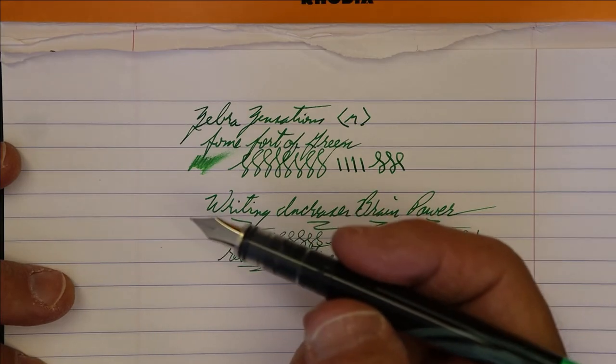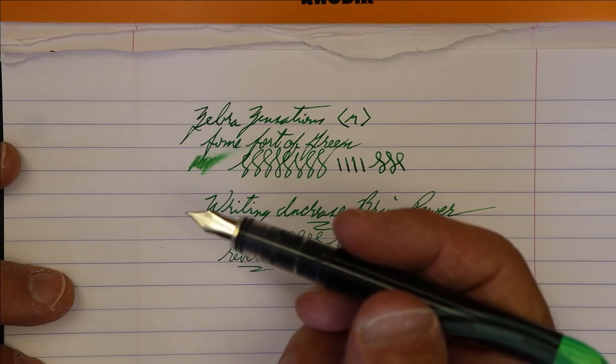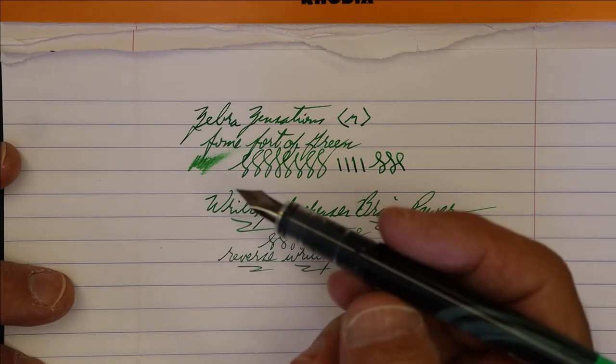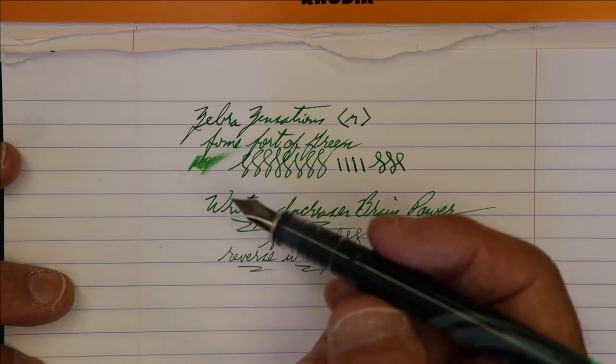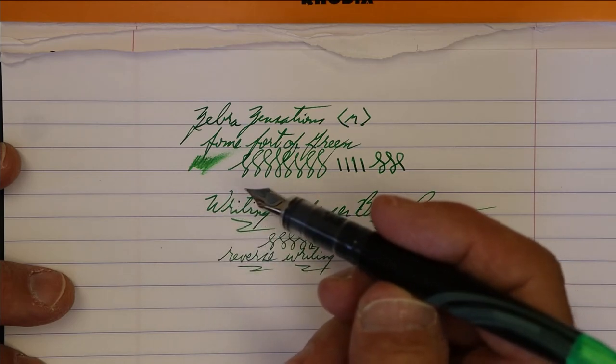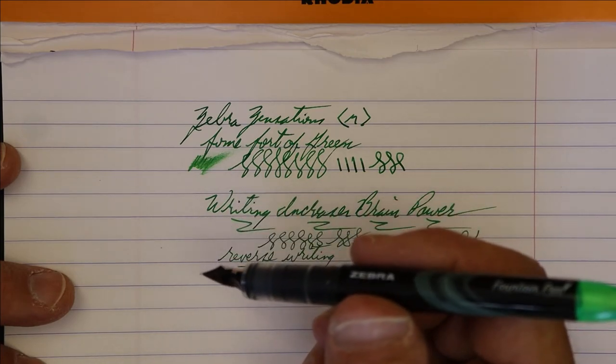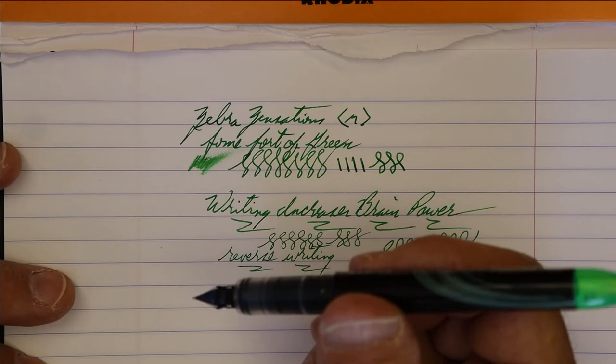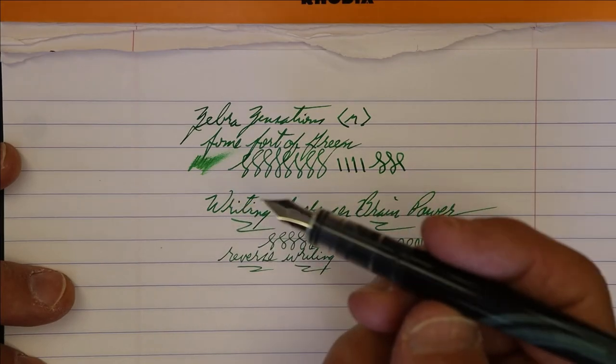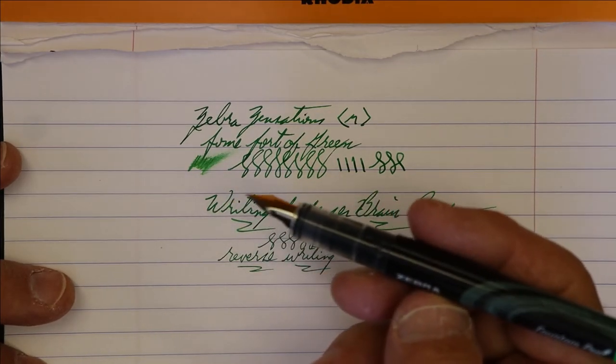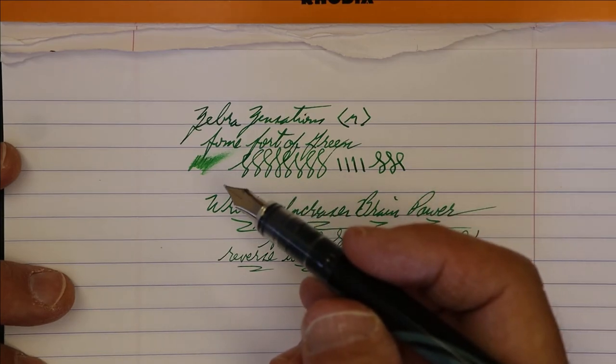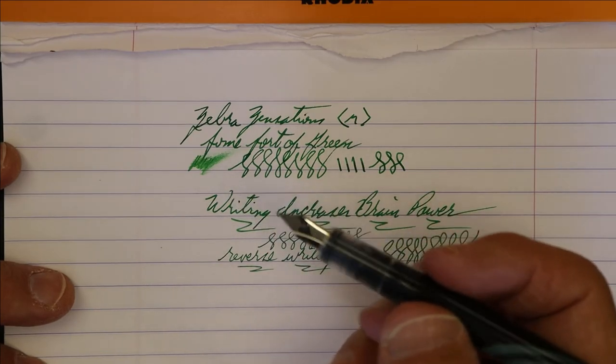You can spend less than five dollars and get a great writing pen. And this is going to have ink to last you for a while, a long while. So I encourage you, I fully endorse Zebra's pen. It's a lot better than the V-301.